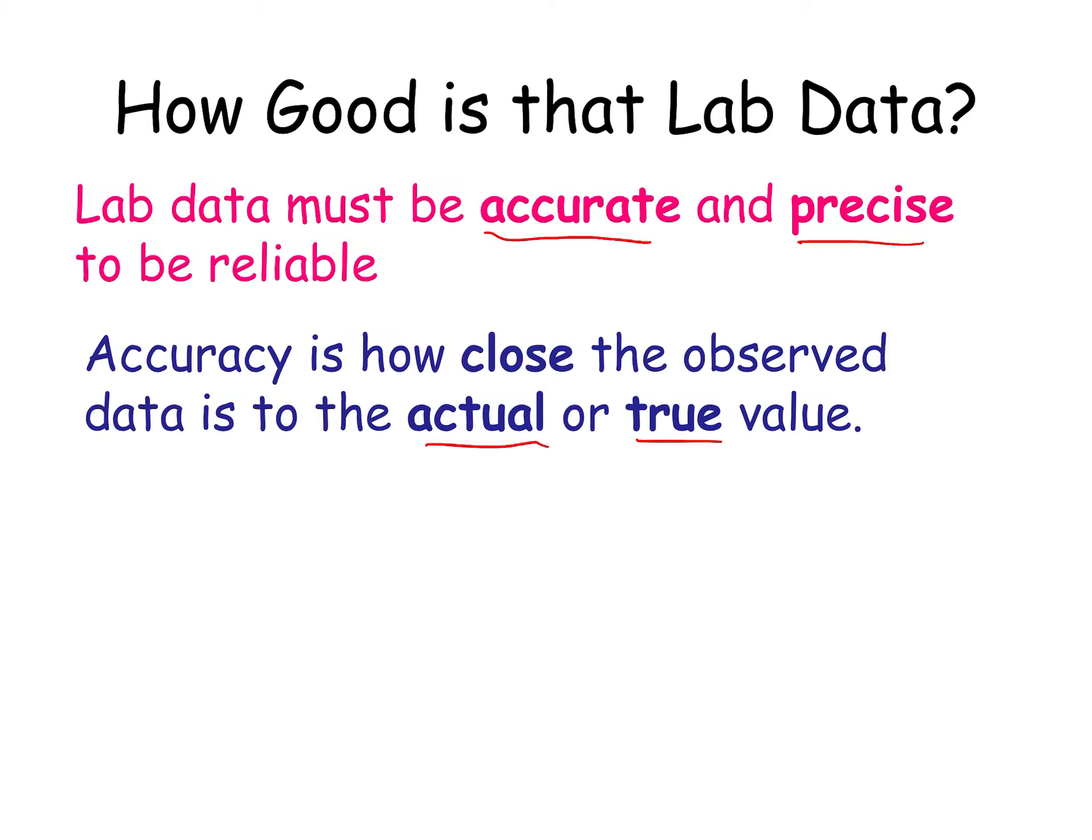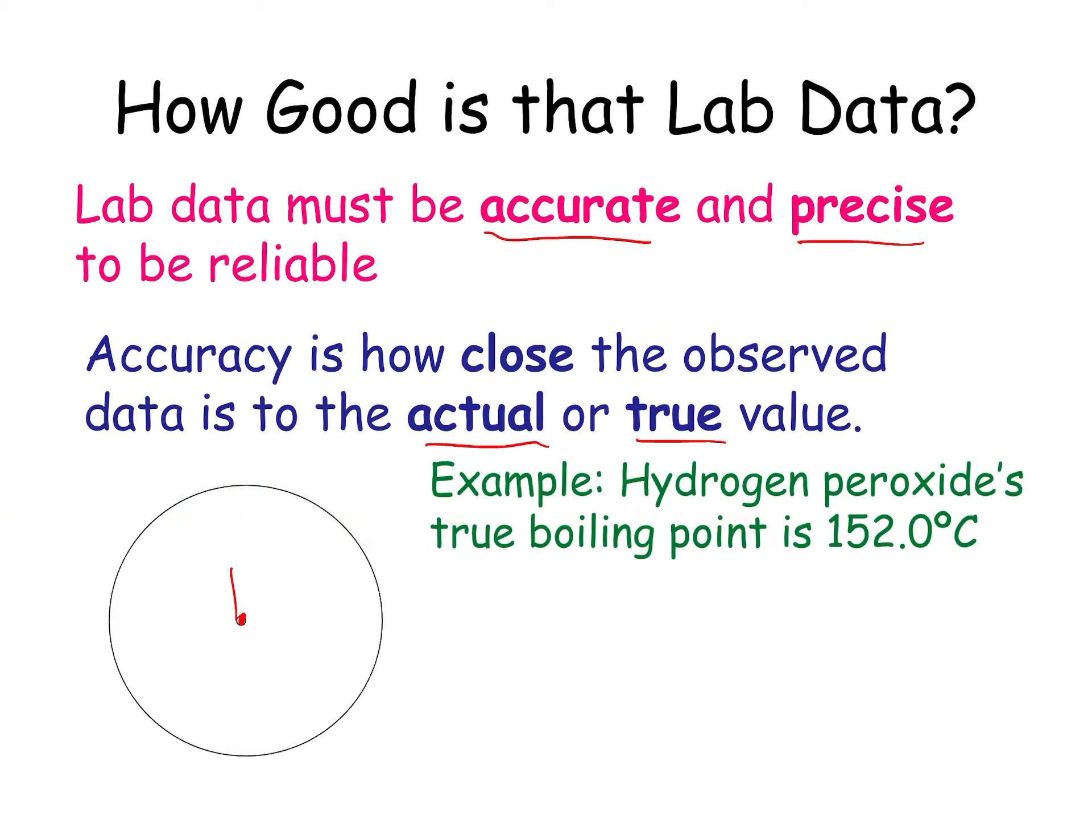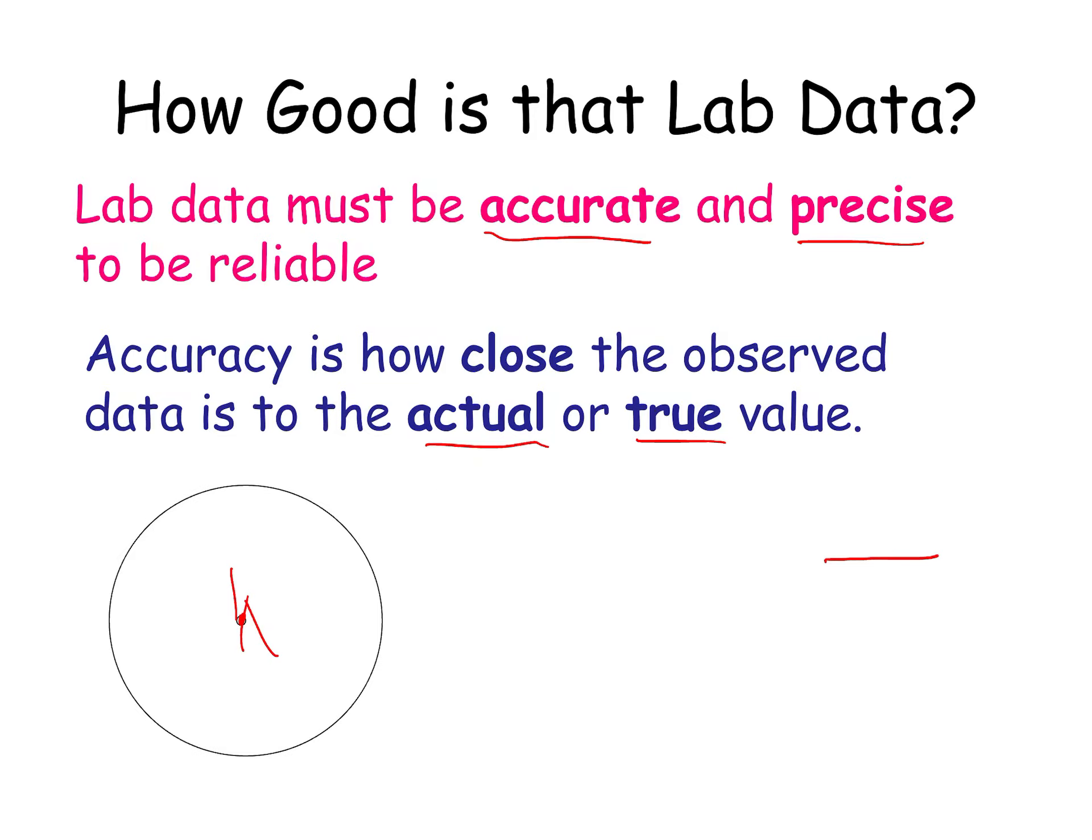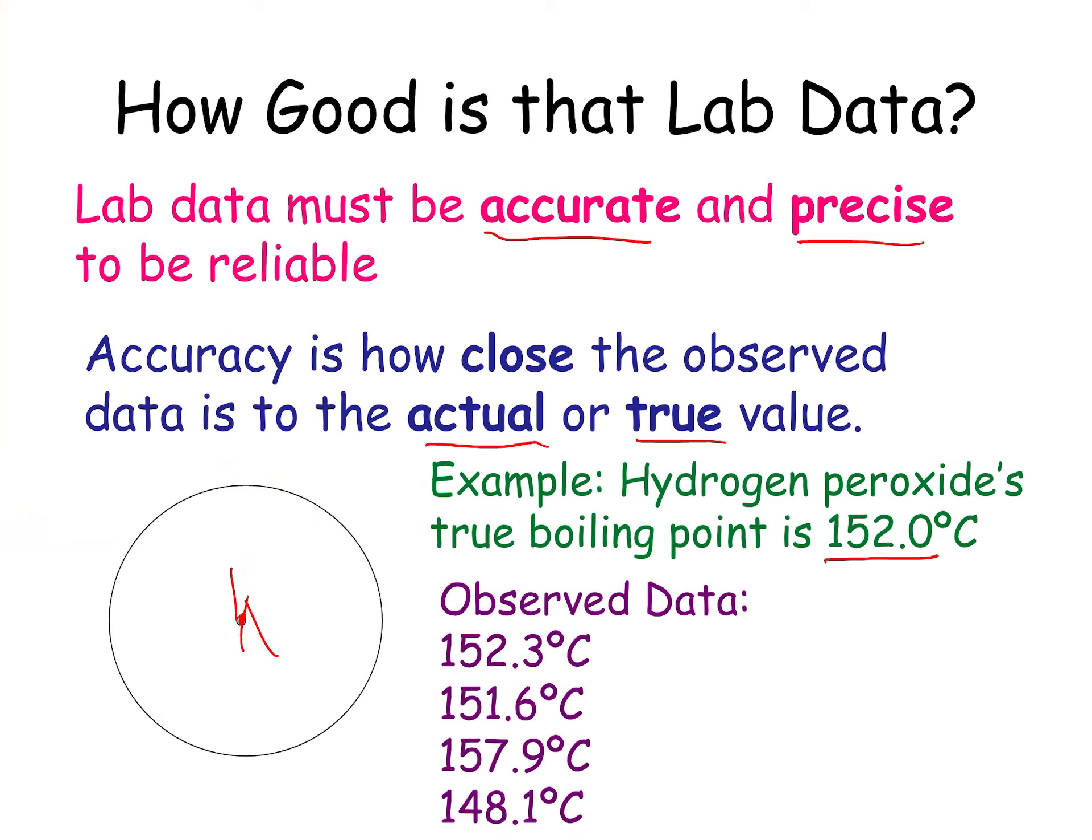So if we're playing darts, and you want to hit the center, if you are accurate, you would hit close to the middle. So if you know that hydrogen peroxide's true boiling point is 152.0 degrees Celsius, which of these data points are accurate, which means close to the true value? 152.3 is pretty darn close to 152. I'm going to say this is accurate. 151.6, that's really close, accurate. 157.9 is pretty far away, several degrees. So this is inaccurate, and so is that. So these are within a couple degrees. These are too many. So accurate, close to the true value.